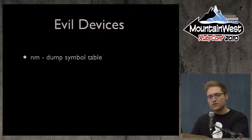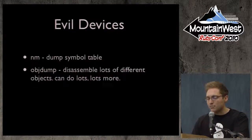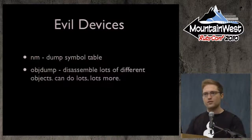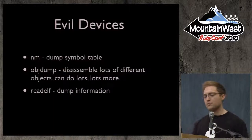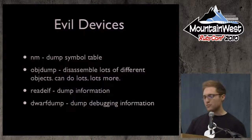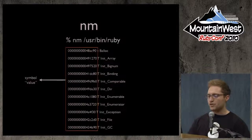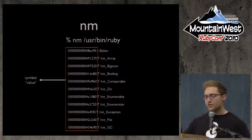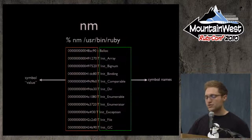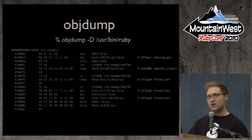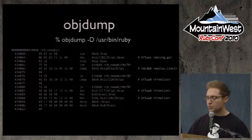Here are some evil devices we need: NM comes default on OSX and Linux and dumps a symbol table. Objdump will disassemble lots of different object formats — ELF, Mach-O, and more. ReadELF is Linux-specific and dumps ELF-specific information about a binary. And there's also DwarfDump, which dumps DWARF debugging information. With NM on the Ruby binary, you see symbol values on the left, symbol names on the right, and type info in the middle. Objdump -D disassembles Ruby: offsets on the left, opcodes next, then the assembly instructions, then helpful metadata on the right.